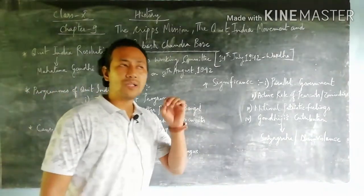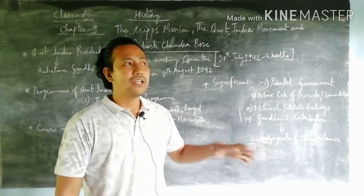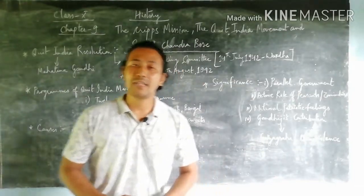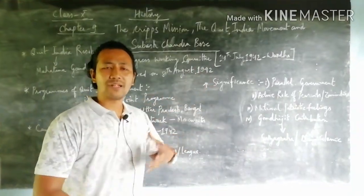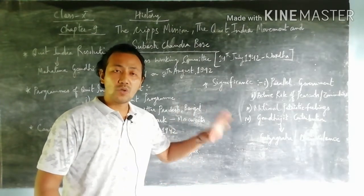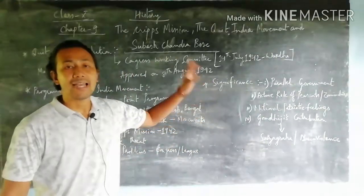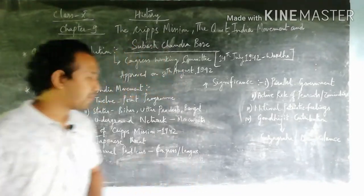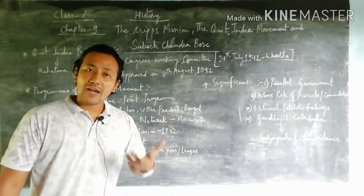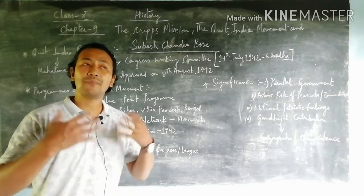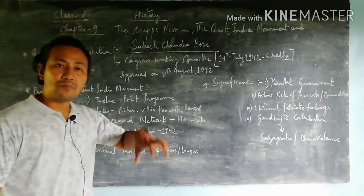Now let us focus on the causes that ultimately led to the failure of the Quit India Movement despite Mahatma Gandhi's contributions in 1942. There was already a Second World War underway, which started in 1939 and ended in 1945. The first main cause was the failure of the Cripps Mission — as taught in the previous class, the Cripps Mission failure of 1942 became a key cause leading to this new resolution.